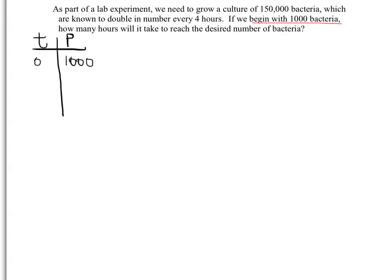We're also given the fact that it's known to double in number every four hours. So what does that mean in terms of t and p? Well, four hours have passed and our population has doubled, so double 1000 gives us 2000. If we keep going with our table, another four hours will have passed, so that'll be eight hours, and then we'll double our 2000, that would give us 4000.